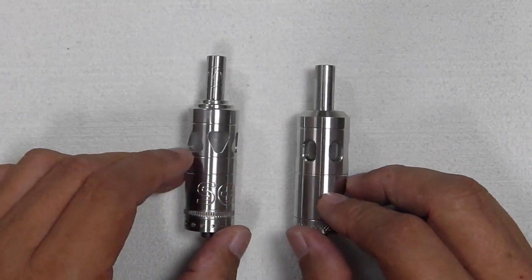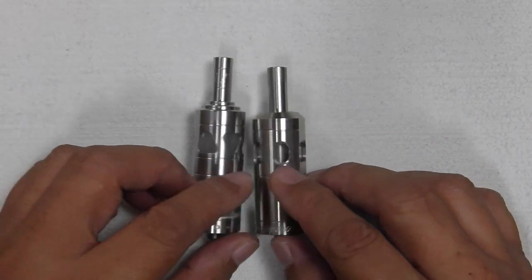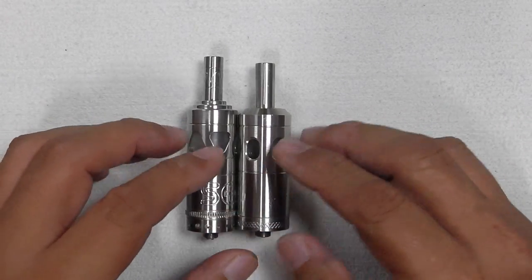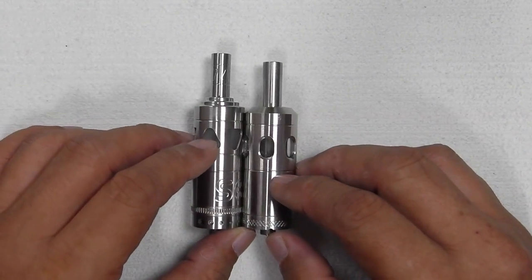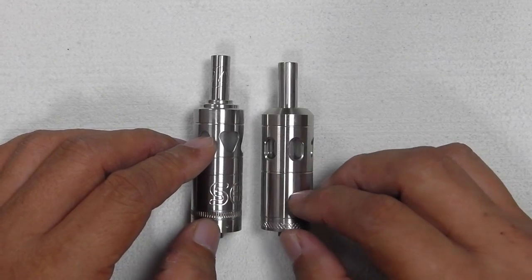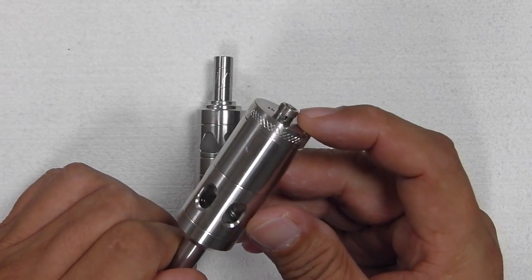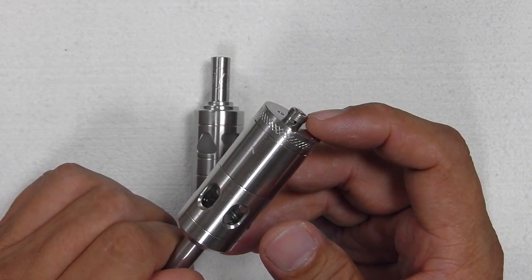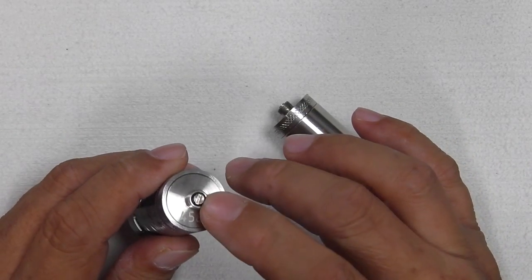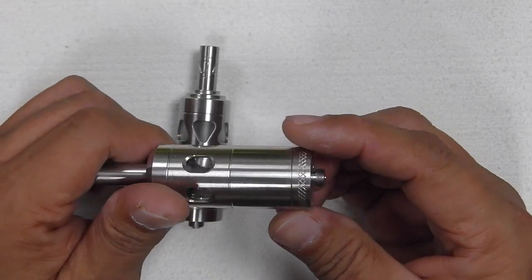Aesthetically, they're different, as you can see. It has got the engravings here, this doesn't have. These have all these grooves all around here, which this doesn't have, so there's a bit of difference here and there. And this comes with the adjustable airflow control, this doesn't come with it.